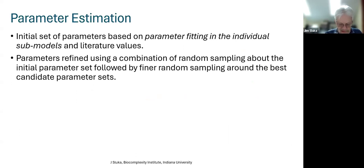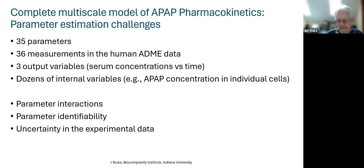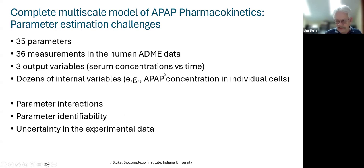Initial parameters came from running individual models standalone — some based on literature values, some from random sampling and hand-tuning. Overall there are 35 parameters in the model and 36 measurements in the human ADME data — 12 measurements each for sulfate, glucuronide, and parent acetaminophen. Desired outputs are concentration versus time for the three compounds. We're interested in parameter interactions, parameter identifiability, and how uncertainty in experimental data affects the model.